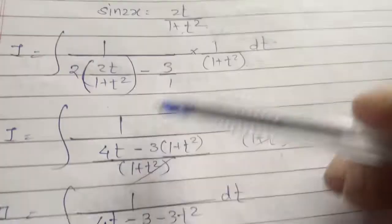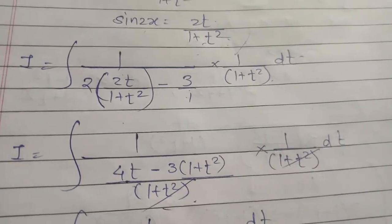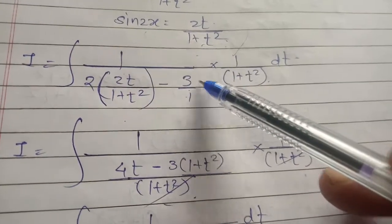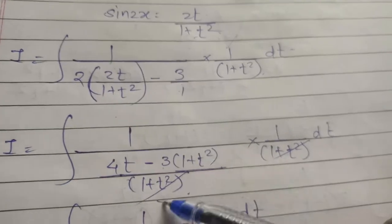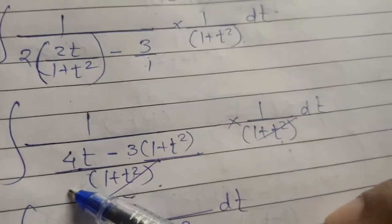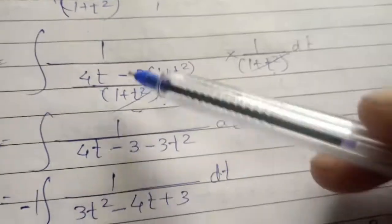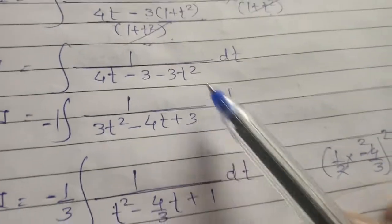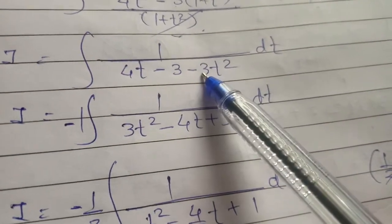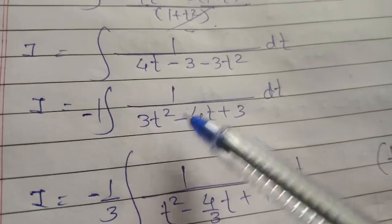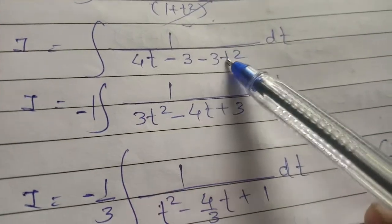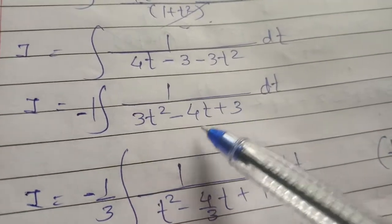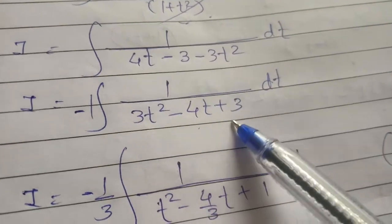Taking the LCM of (1 plus t square), cross-multiplying gives the numerator as 4t minus 3(1 plus t square). Expanding: 4t minus 3 minus 3t square. Rearranging and taking minus sign as common: minus(3t square minus 4t plus 3) dt.